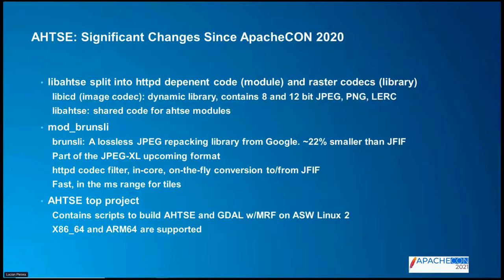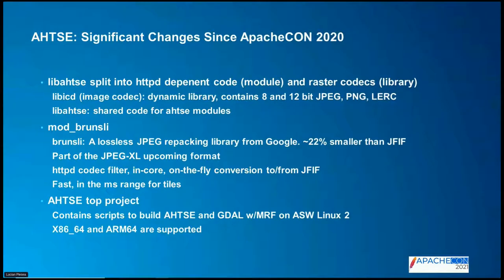Mod Brunsli is an HTTPD codec filter, so it works like gzip in Apache HTTPD. You can use mod_filter to configure it based on type or flags, and it does on-the-fly conversion between the Brunsli format and JFIF, shrinking the data. It's pretty fast — basically equivalent to JPEG, in the millisecond range for normal tile sizes of 256×256 or 512×512.